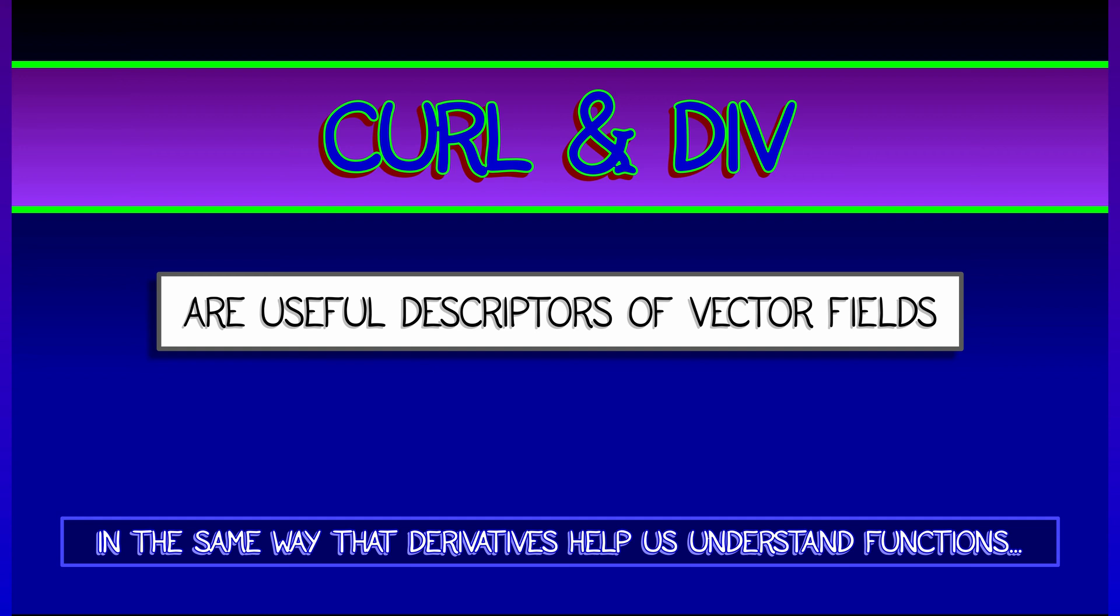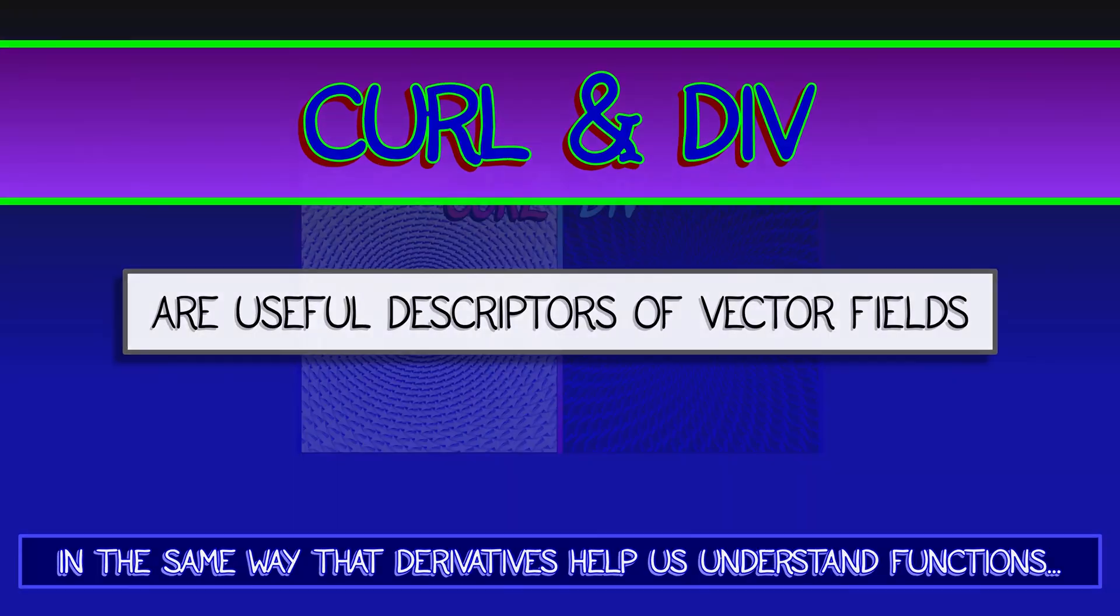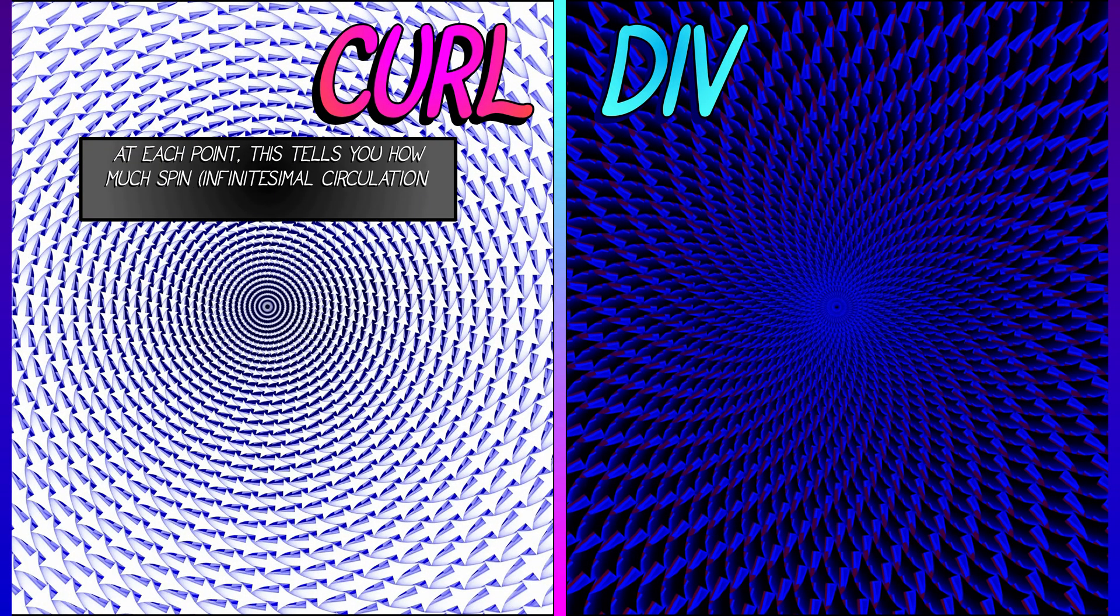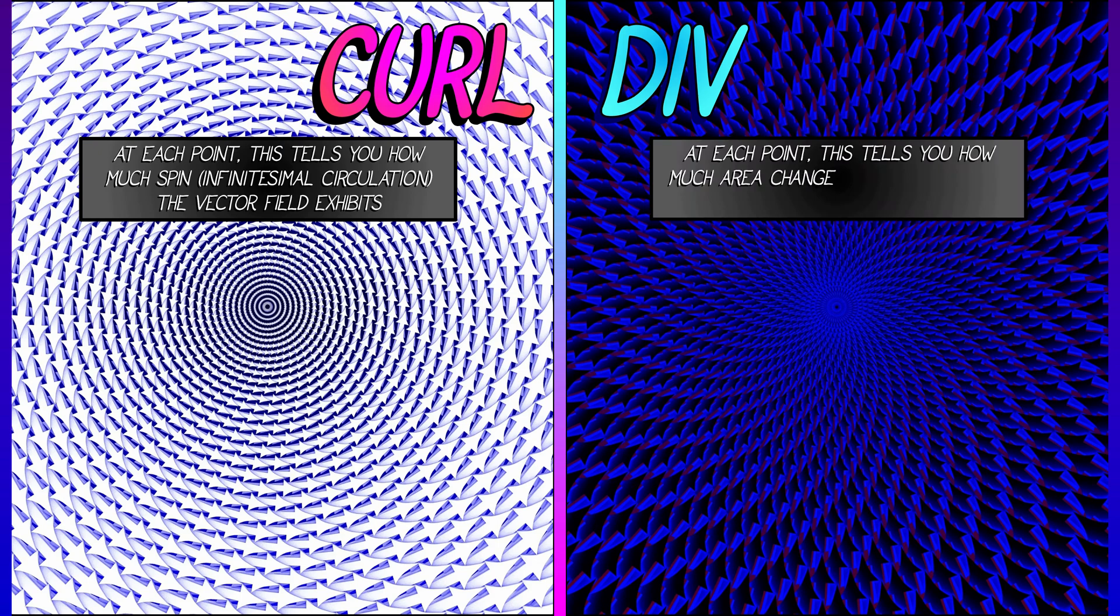Now remember how curl and divergence work. The intuition is that a curl is rotation, it is infinitesimal spin or circulation that the vector field exhibits, whereas the divergence is telling you about expansion or contraction associated to that vector field.